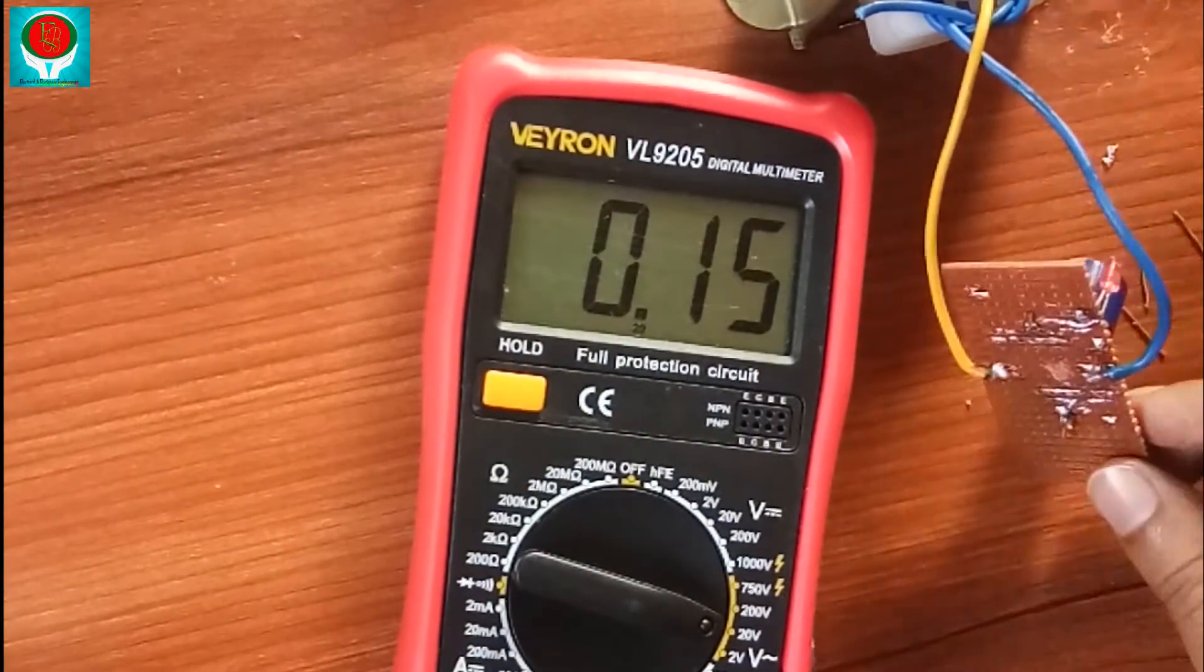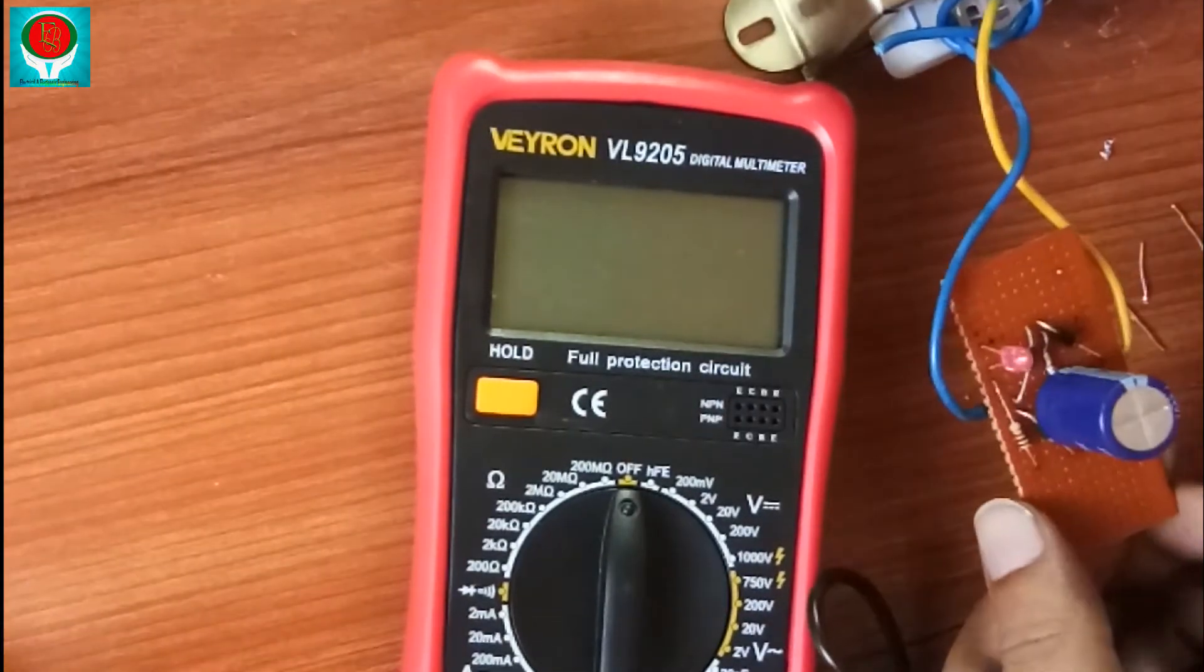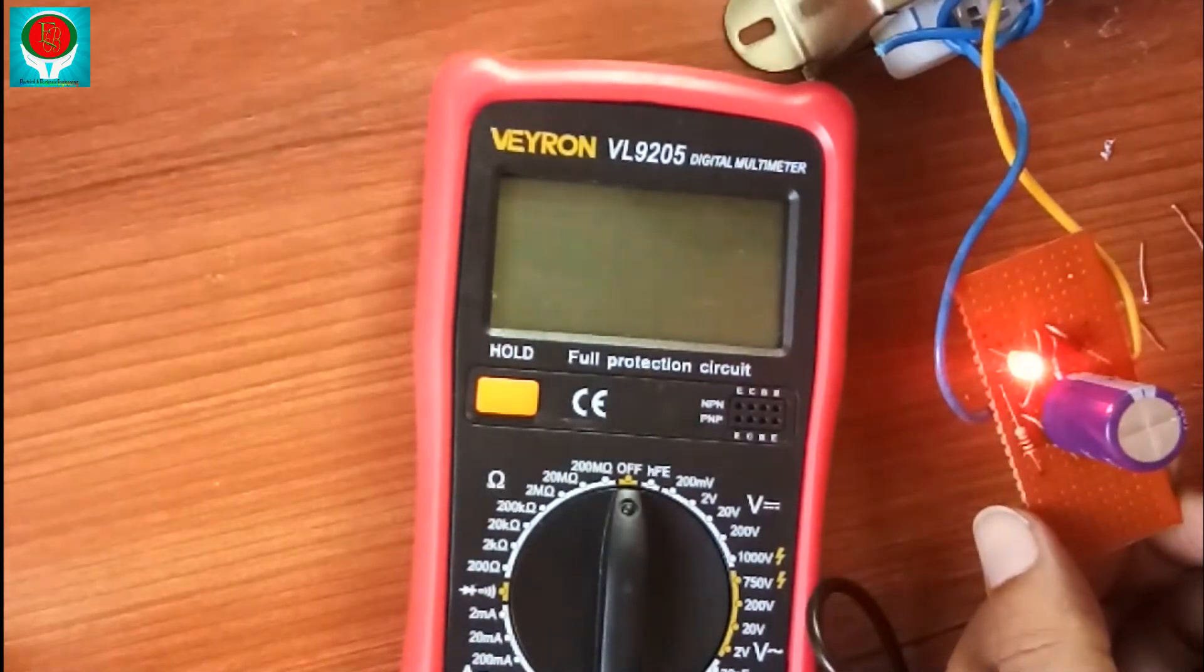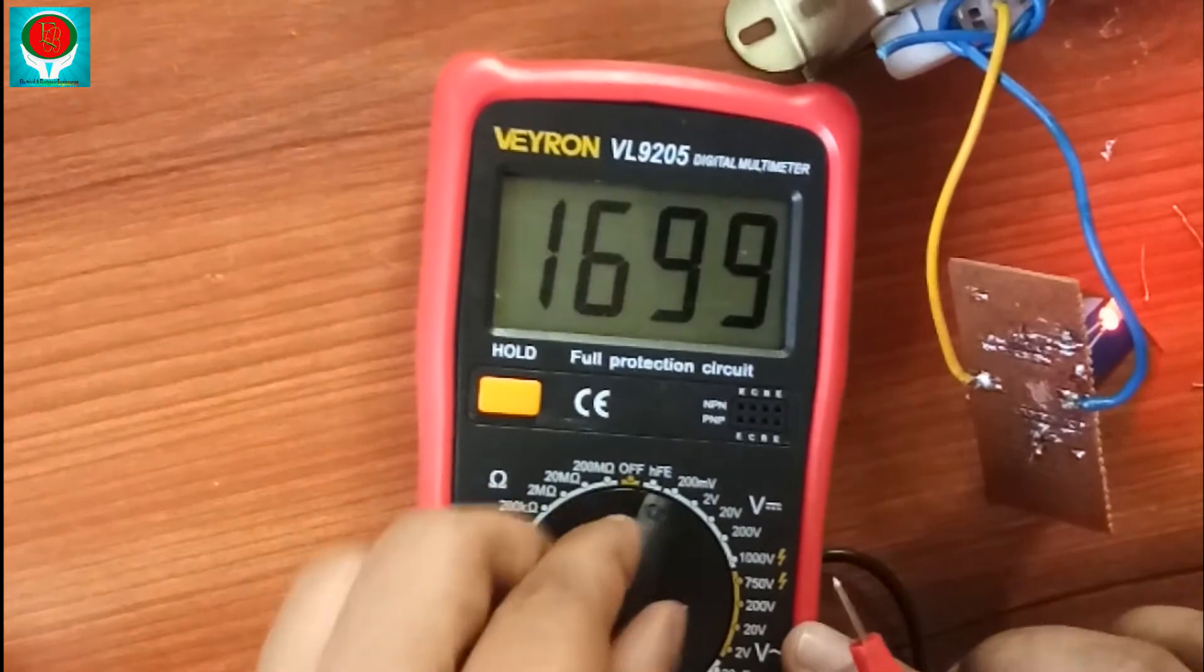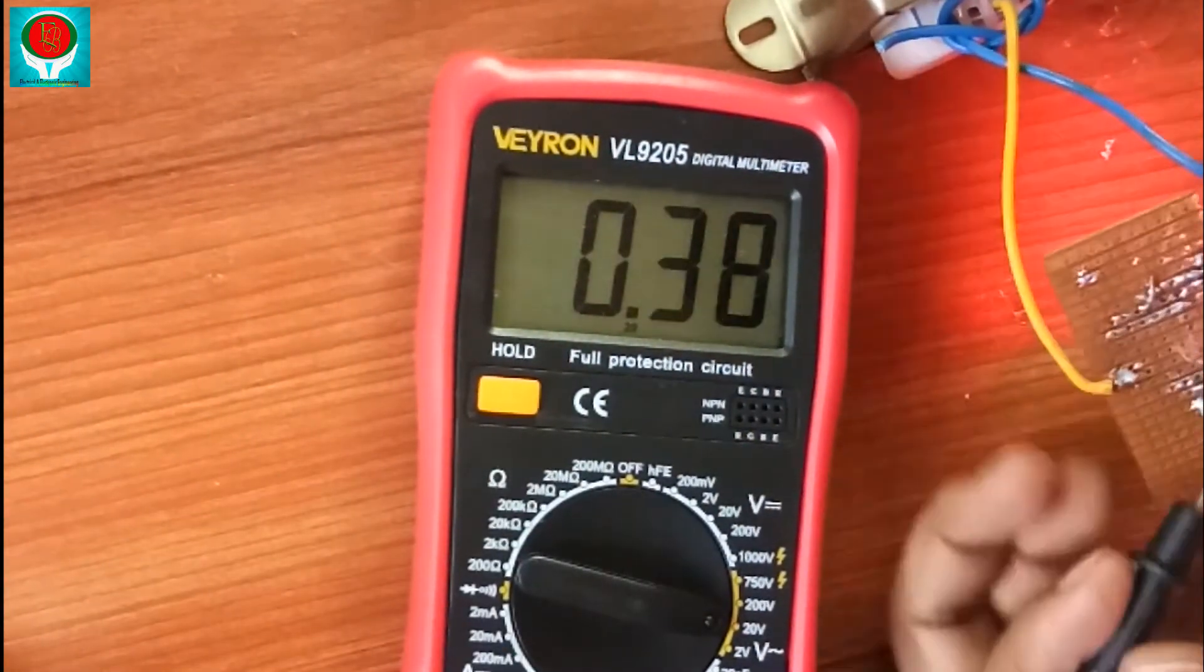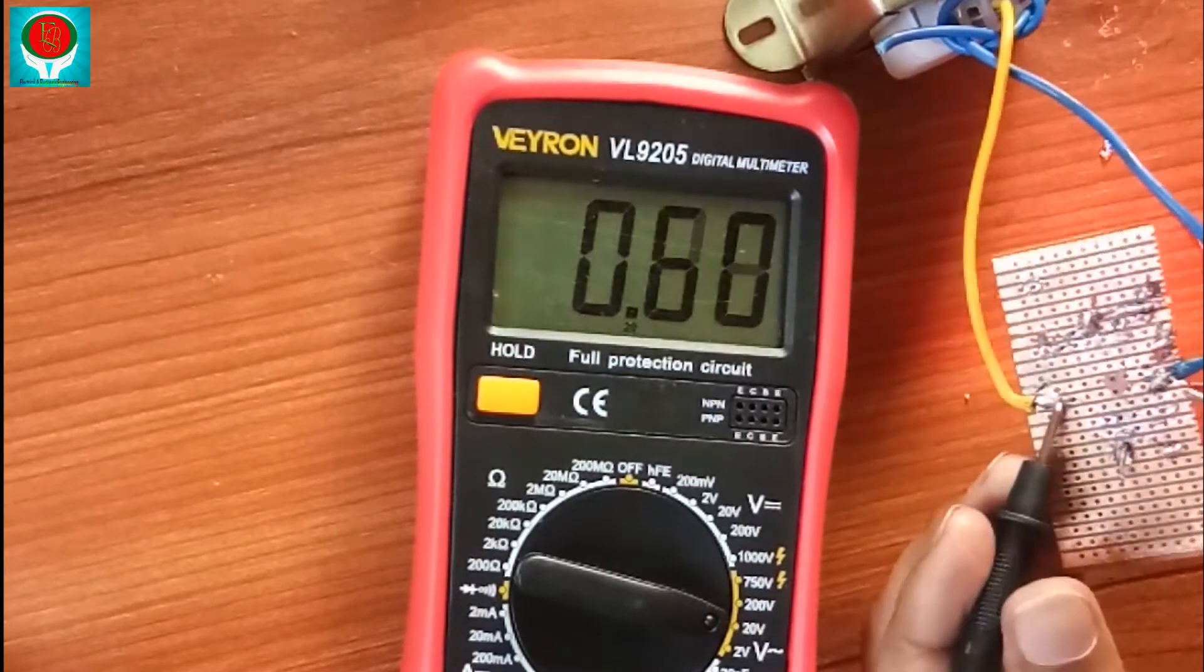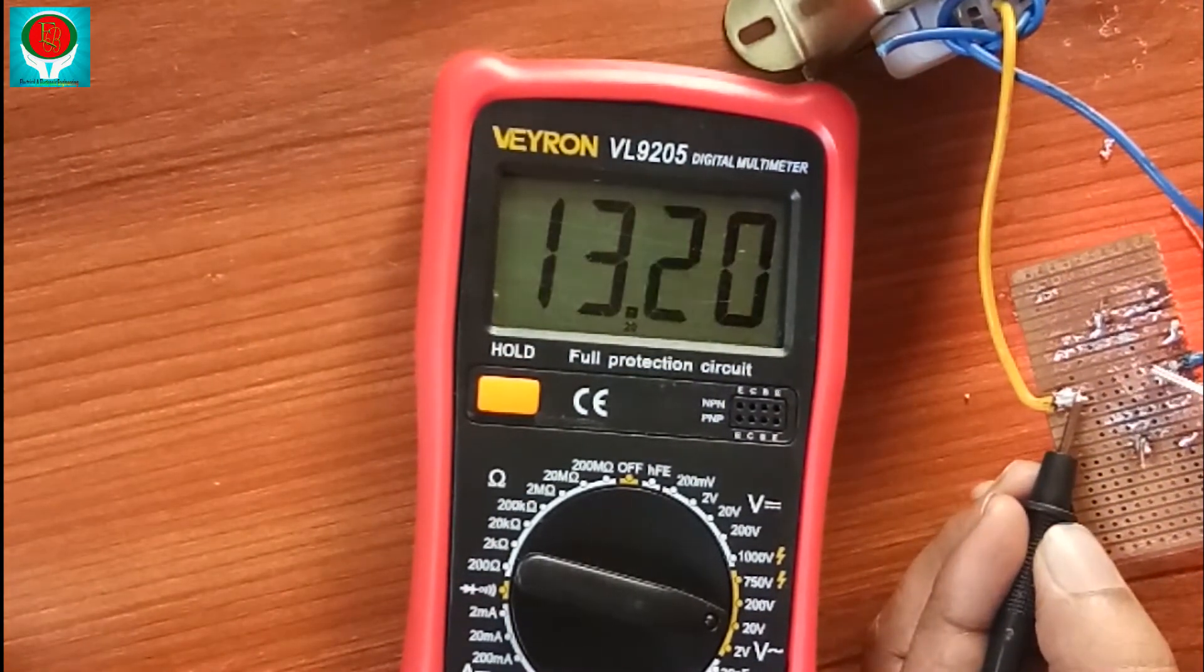Multimeter DC terminal select 20V. Multimeter shows output voltage 13.20 volts.